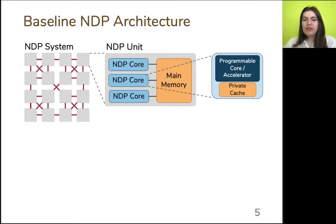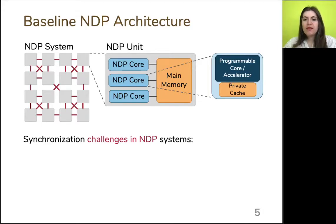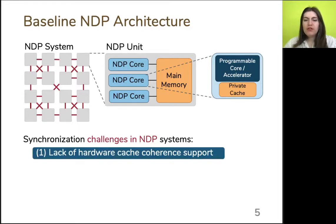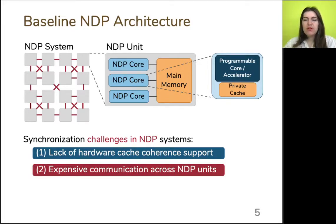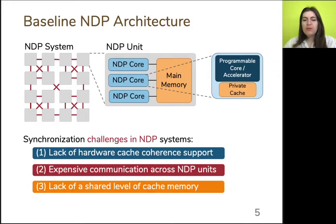To fully leverage the benefits of NDP systems for these parallel applications, an effective synchronization solution is necessary. A typical NDP architecture supports several NDP units connected to each other, with each unit comprising multiple NDP cores close to main memory. We identify three important characteristics that necessitate a new approach to support efficient synchronization in NDP systems. First, most NDP architectures do not support conventional hardware coherence protocols due to their high area and traffic overheads. Second, in NDP systems the inter-unit communication is quite expensive both in performance and energy. Third, most NDP architectures lack shared caches that could enable a low-cost communication and synchronization among NDP cores of the system.